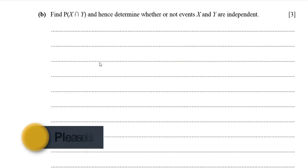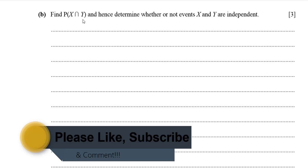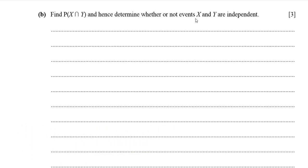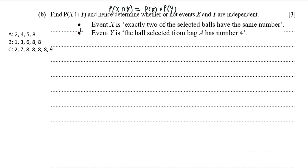Part b: find the probability of X intersection Y, and hence determine whether events X and Y are independent. To decide independence, we use the property that P(X ∩ Y) = P(X) × P(Y). If this holds, the events are independent; otherwise they are not. Let me recall event X — exactly two selected balls have the same number — and event Y — the ball from bag A has number 4.